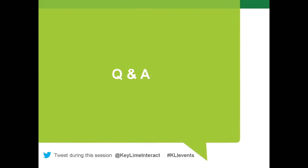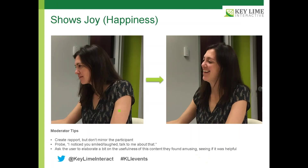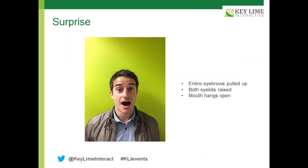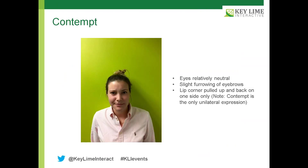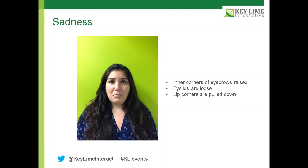That concludes all of the content I wanted to share, and now we'll move on to a Q&A section. One of the questions that came in early on was a clarification: what did you mean by contempt is the only unilateral expression? By being a unilateral expression, only one side of her face is really making the critical action. You can see the lip corner on the right side of her face is raised, but on the left side it remains in pretty much a neutral state. As opposed to sadness, for example — conversely, you see both lip corners are pulled down simultaneously, making it a bilateral facial expression.